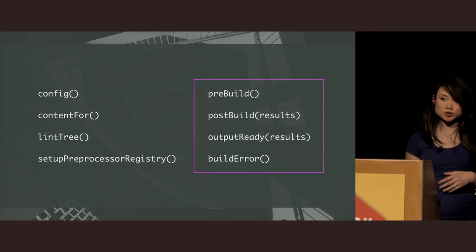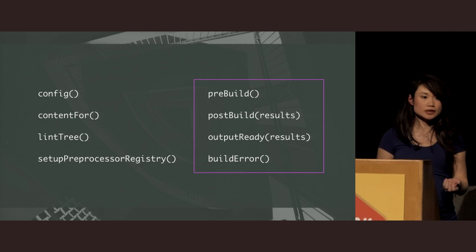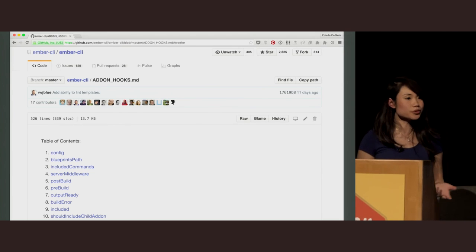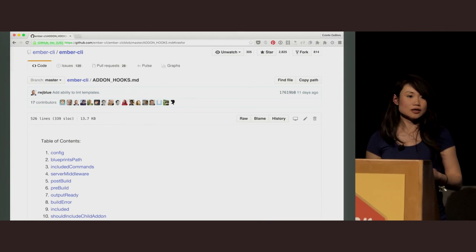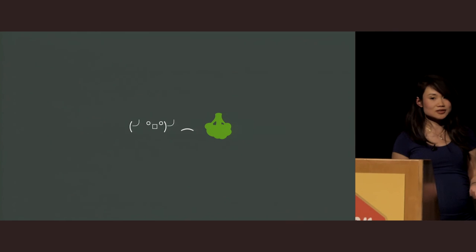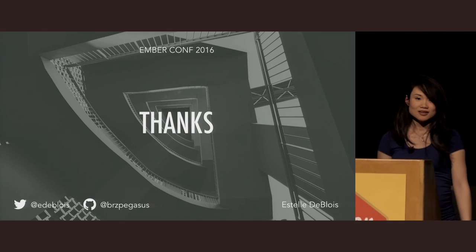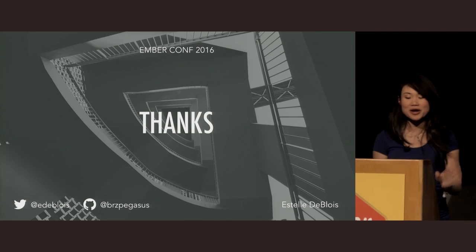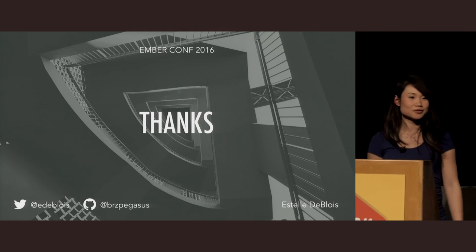What I do hope you've been able to take away from this talk is a basic understanding of a broccoli build, how it fits inside of Ember CLI, and how you can manipulate it further. When you return to the add-on hooks documentation in the Ember CLI repo, you can finally start making sense of things. Thank you so much for attending. If you have any questions, feel free to find me at the end of the conference. You can also tweet me at EWS or find me on the Ember community Slack. I hope you enjoy the rest of the conference!